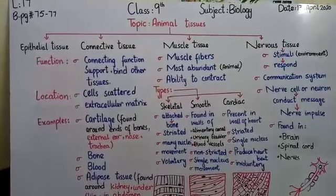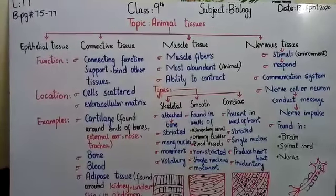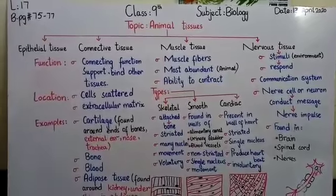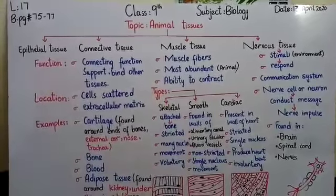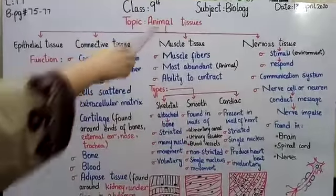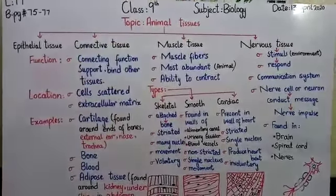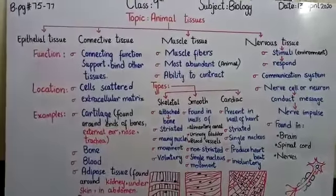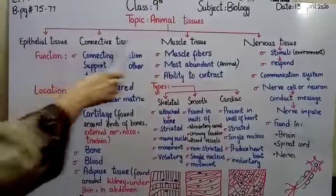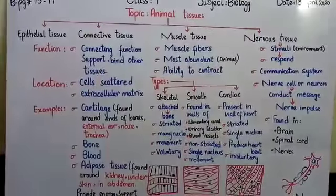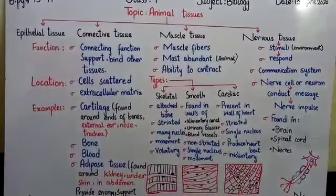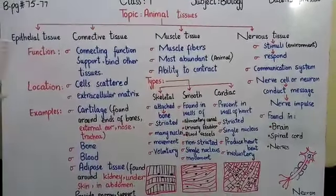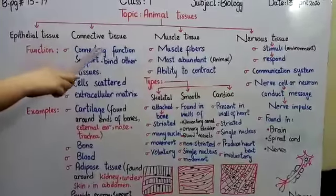Assalamu alaikum, class 9. This is your biology lecture number 17. Students, open your book page number 75. Today our topic is animal tissues. As you know, in the previous lecture we discussed epithelial tissue. Today we will discuss these types of tissues. Basically, there are four major categories of animal tissues: epithelial tissue, connective tissue, muscle tissue, and nervous tissue.